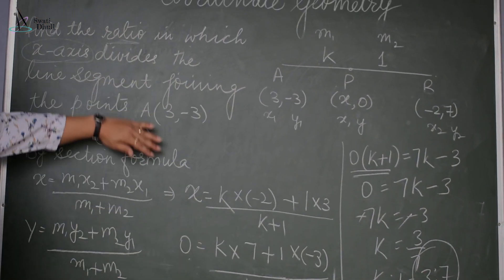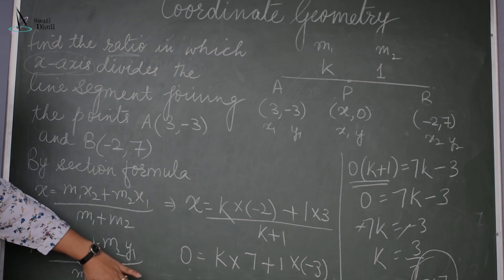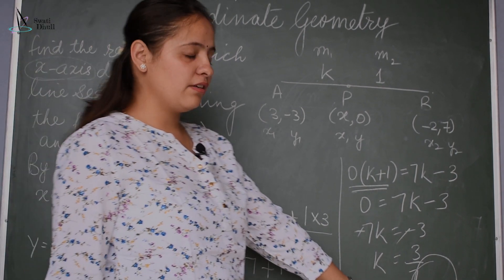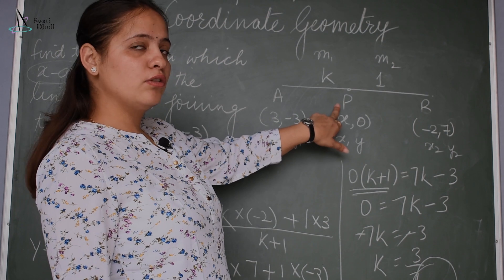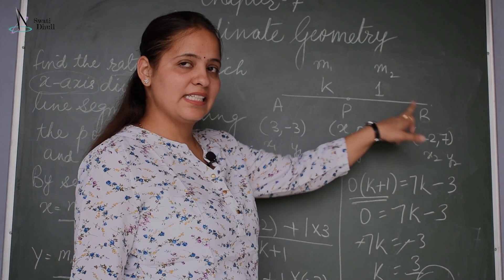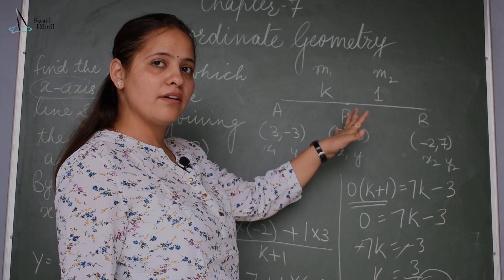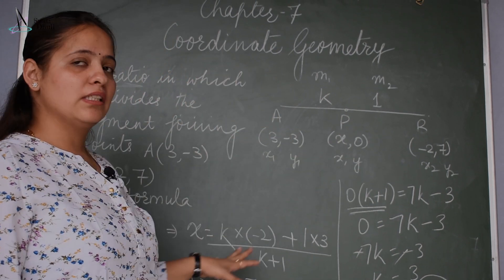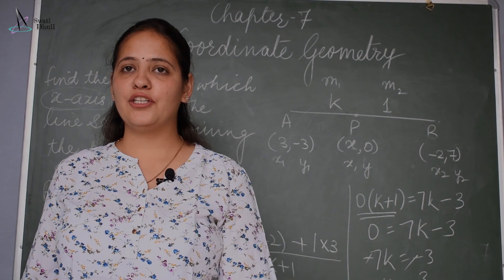This is how we use the section formula — either to find the coordinates of a point P that divides a line segment in a given ratio, or to find the ratio itself. This was all about the section formula. Thank you.